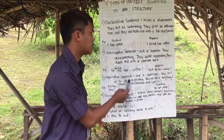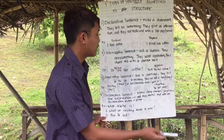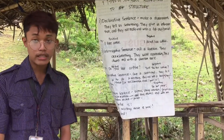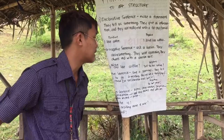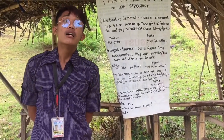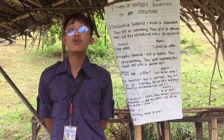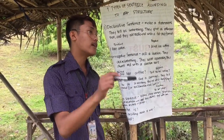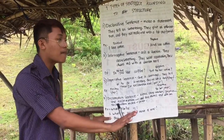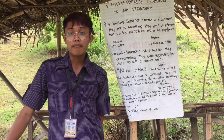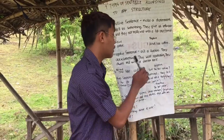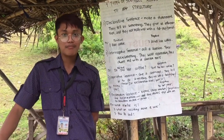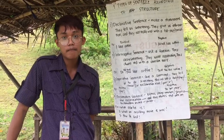Let's proceed to number three — imperative sentence. The definition: give a command or tell us to do something. They end with a full stop/period or exclamation mark point. When we say imperative sentence, you are commanding or telling someone to do something. The positive example is 'Stop' — he or she wants you to stop. The negative example is 'Do not stop' — also commanding you to not stop. It's very easy. Is that clear? Yes, Sir.